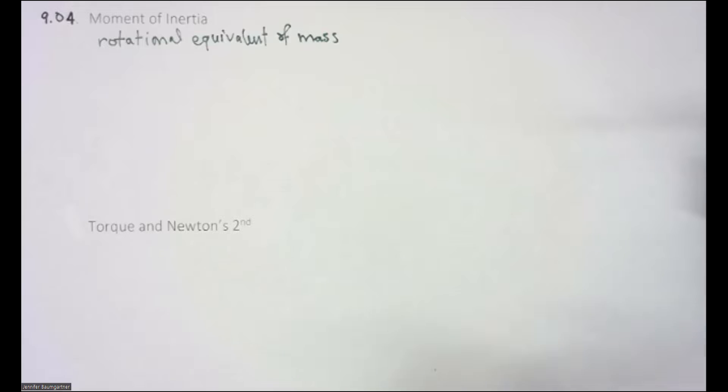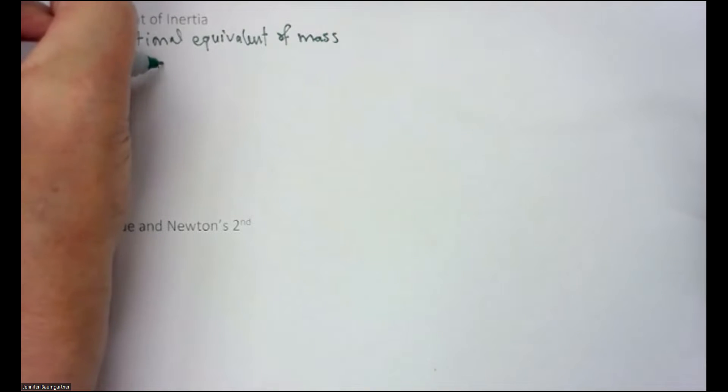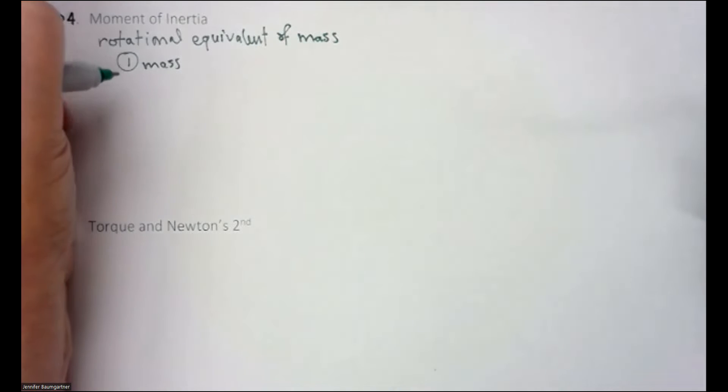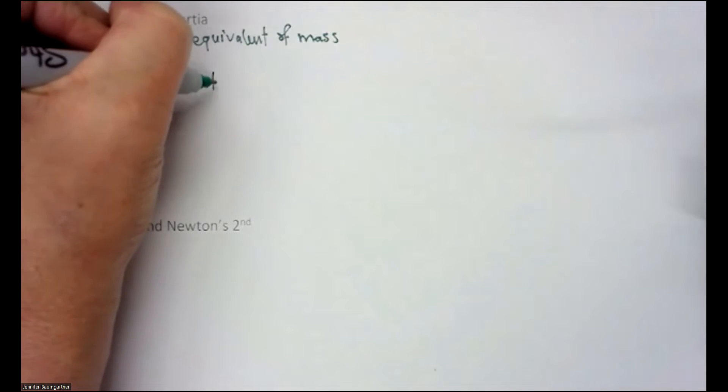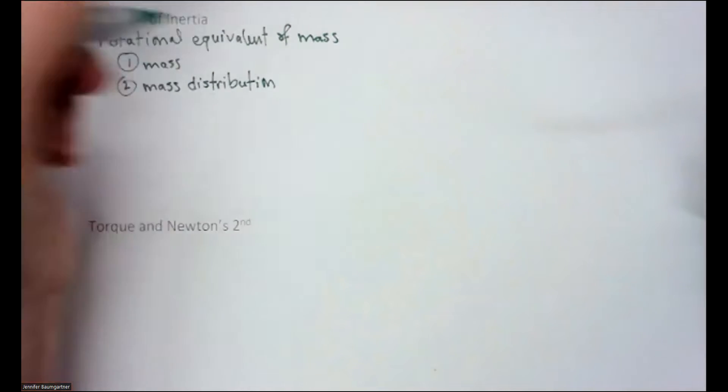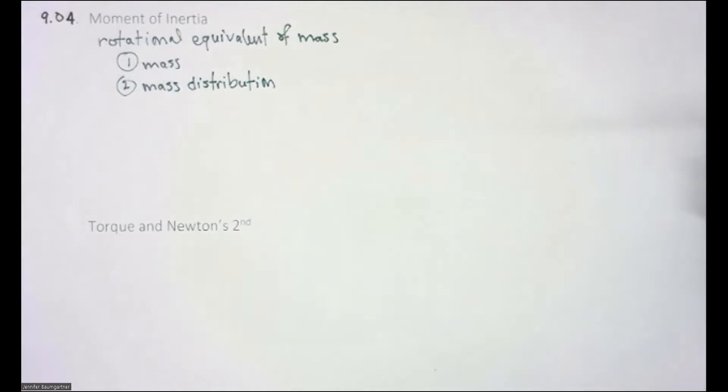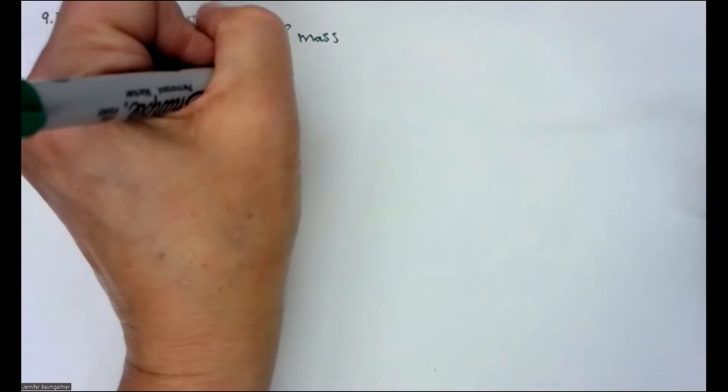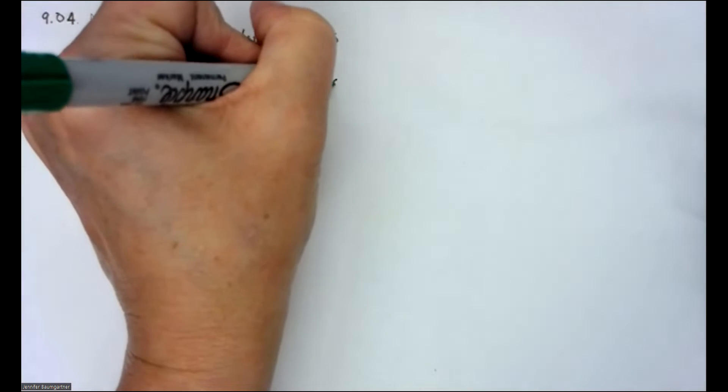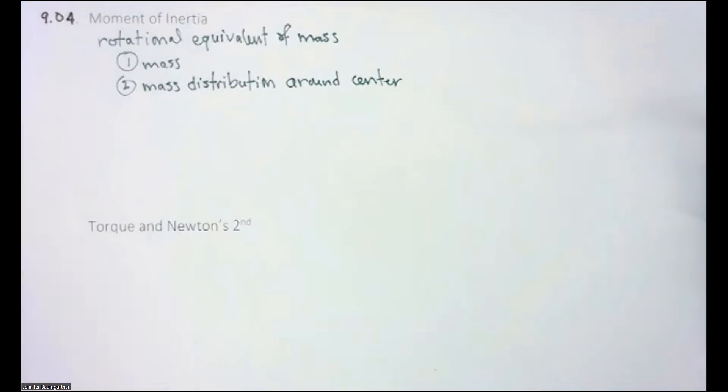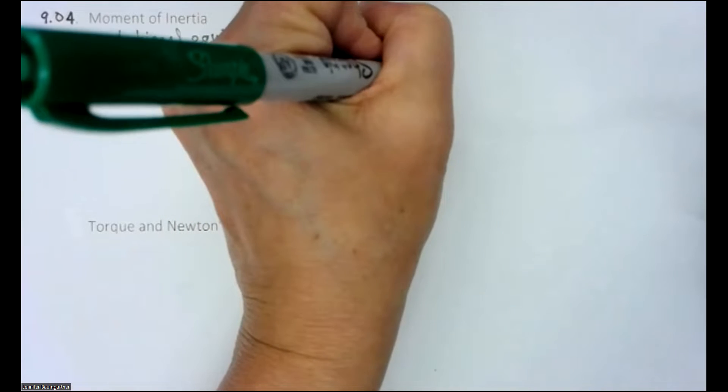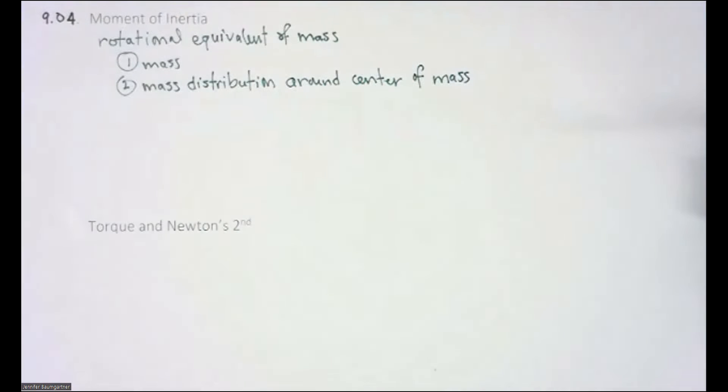So what is moment of inertia? In rotational motion, we have to consider two things. We have to consider one, the mass, and two, we have to consider the mass distribution, or how the mass is centered around the pivot point. And remember, we call that the center of mass.